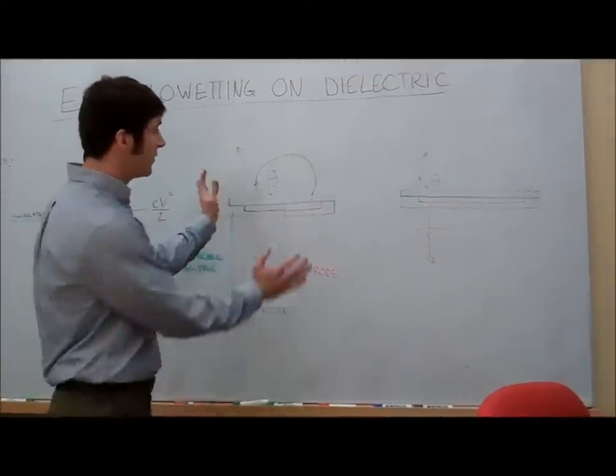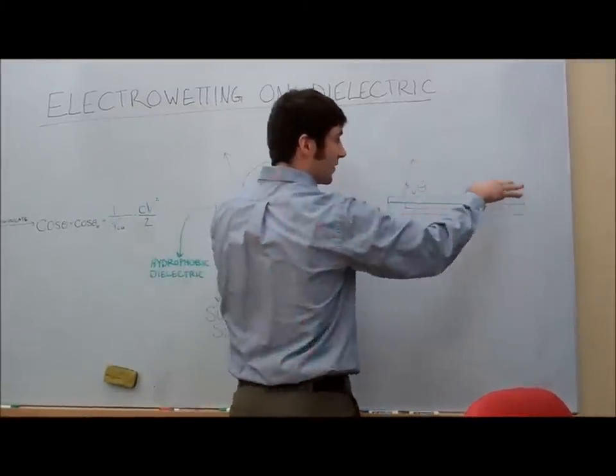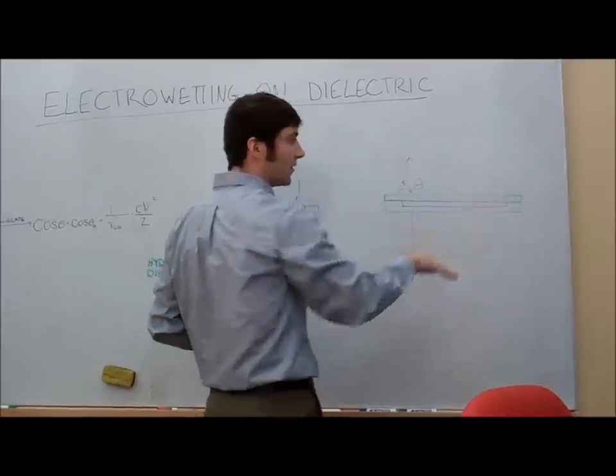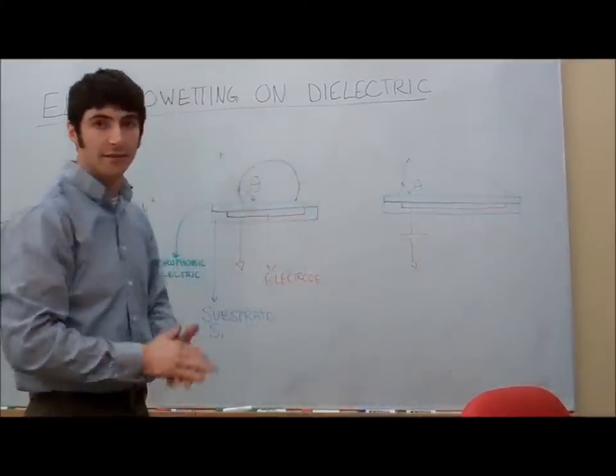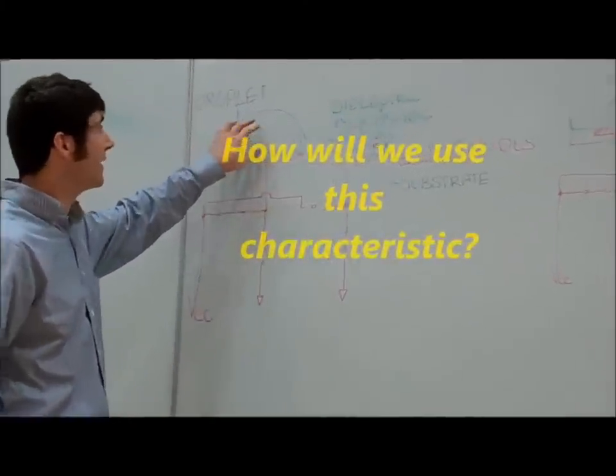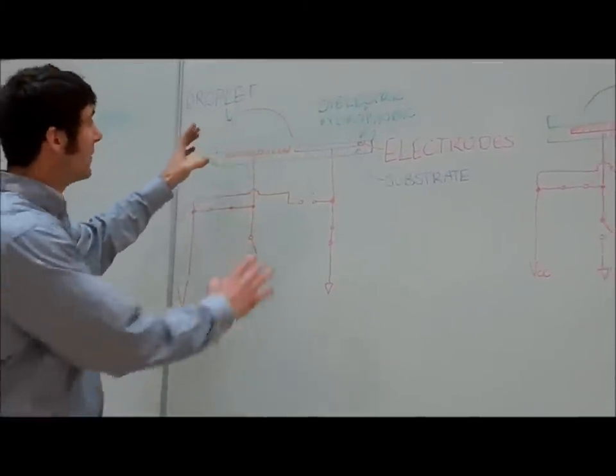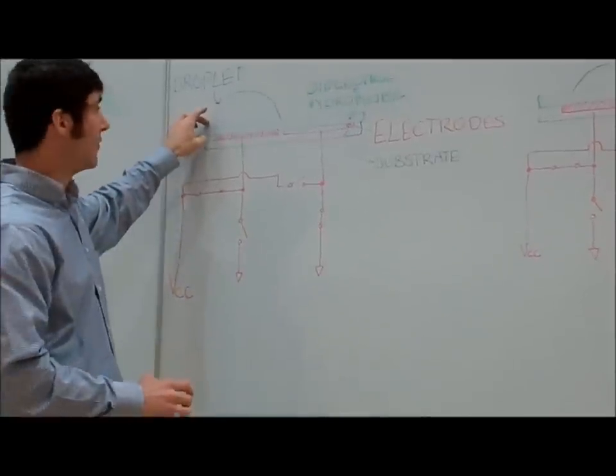So without any voltage, we get this nice smooth bubble. We apply a voltage and it flattens out, creates a smaller contact angle and a larger area in contact with our surface. Before I described how the surface tension and how this droplet wets to our substrate here, how this contact angle is affected by voltage.